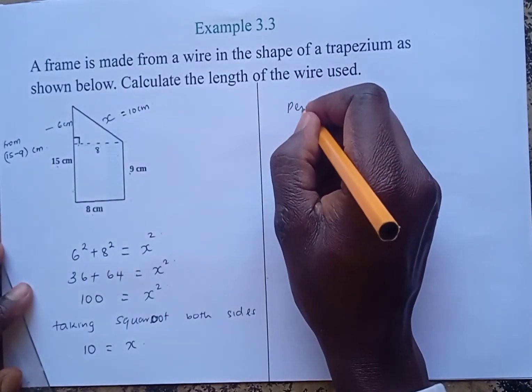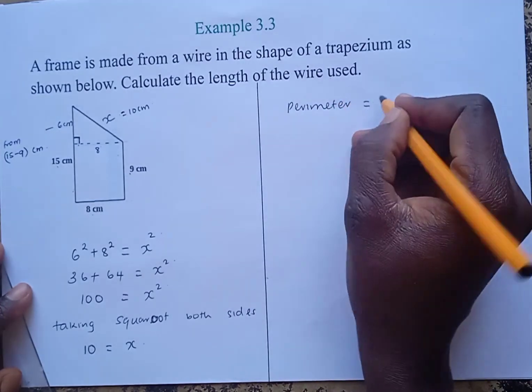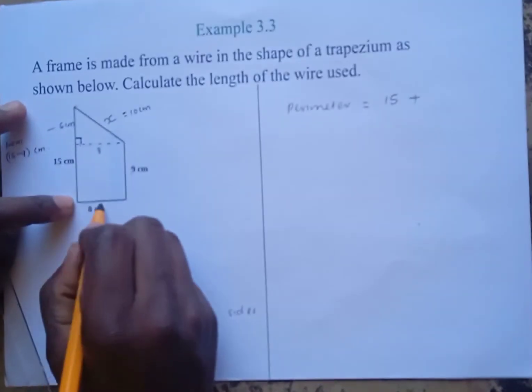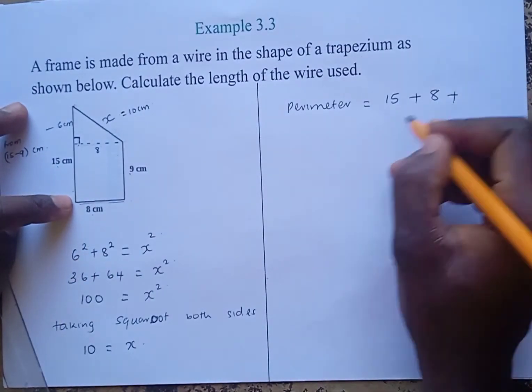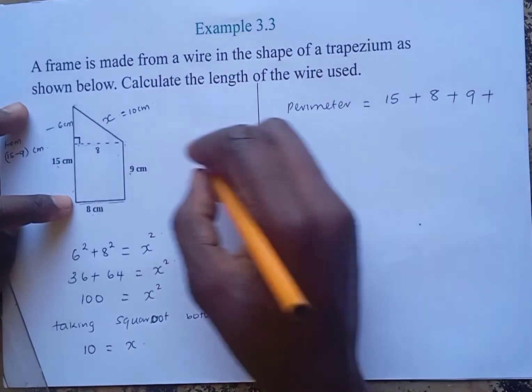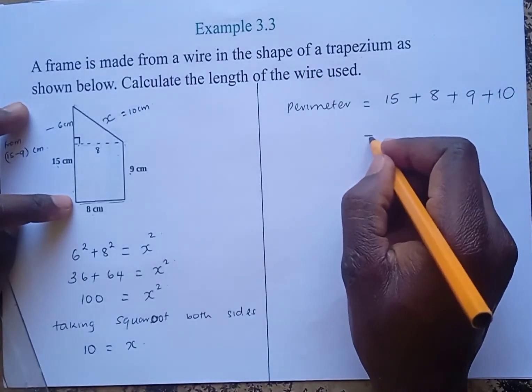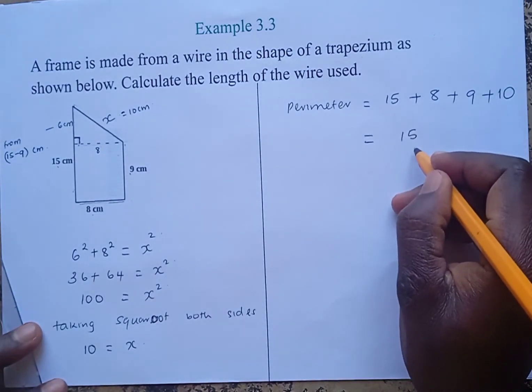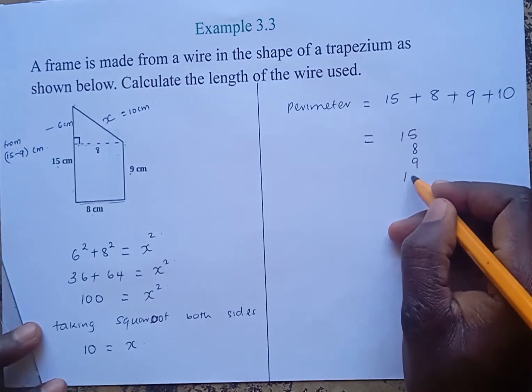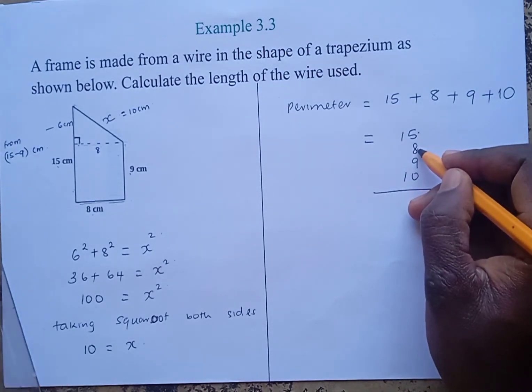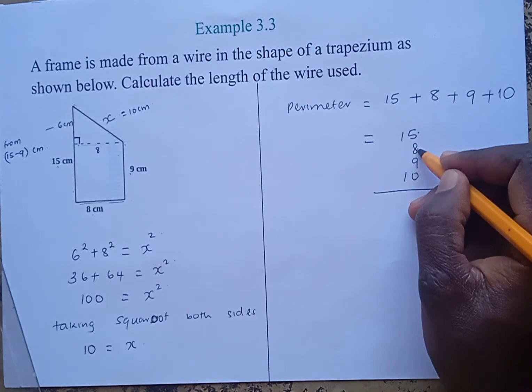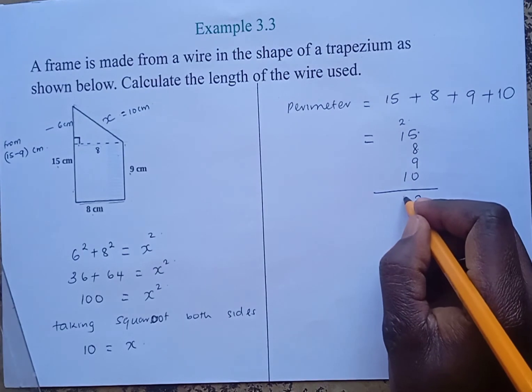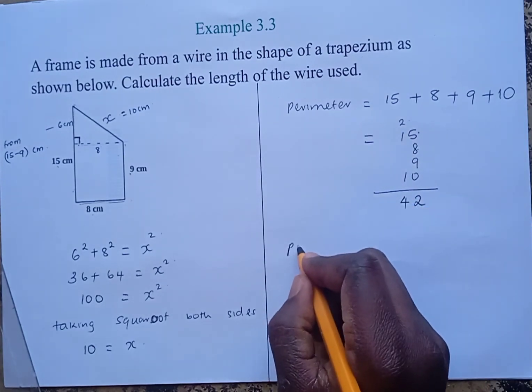Now to get the perimeter, we add all the lengths. The perimeter will be 15 centimeters plus 8 centimeters plus 9 centimeters plus 10 centimeters. We arrange them vertically: 15, 8, 9, and 10. 5 plus 8 is 13, plus 9 is 22, so we write 2 and carry 2. 2 plus 1 plus 1 plus 1 is 4. Therefore, the perimeter is 42 centimeters.